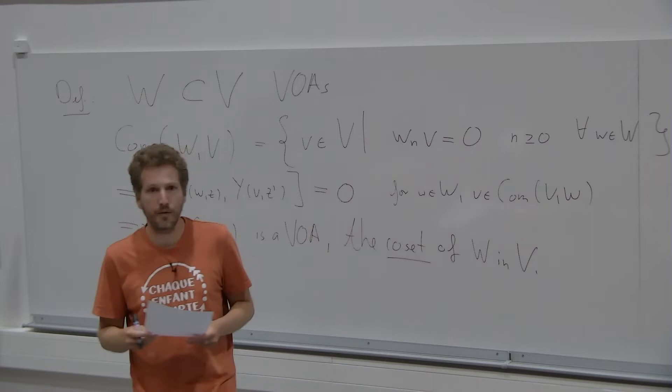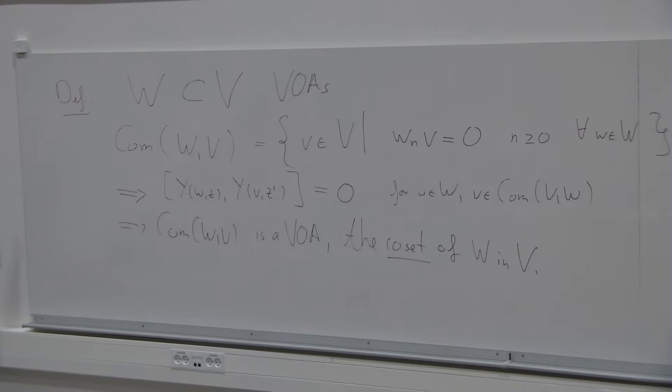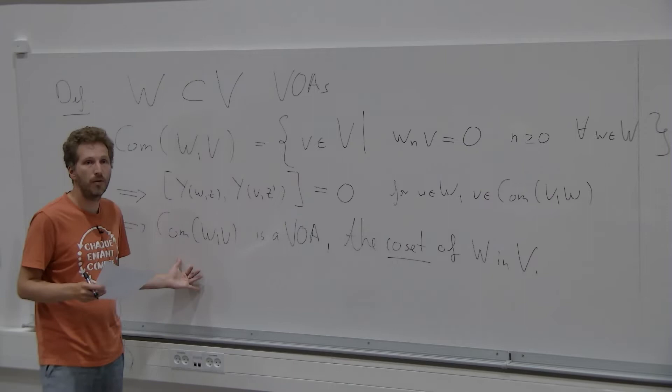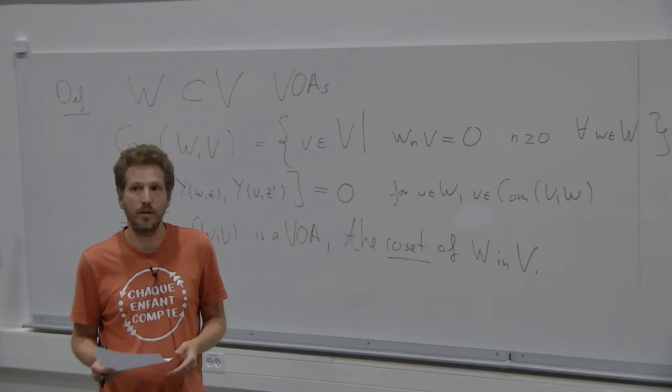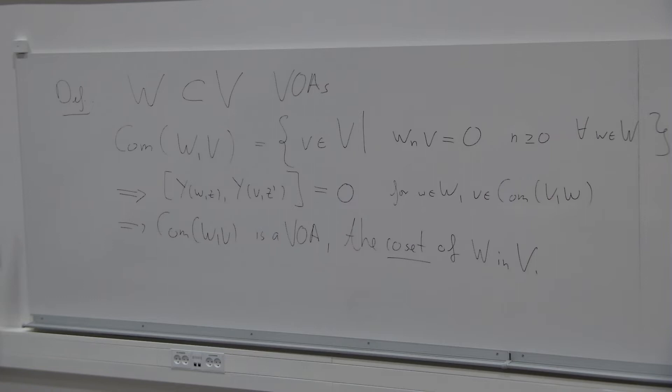So, this name coset comes from physics. Everything comes from physics. And it is what they were looking, physicists were looking at something called gauged Wess-Zumino-Witten models, and whose symmetry algebra is described by such commutants. And geometrically, they think about this as conformal field theories, whose target space is not the compact Lie group. That would be the case in the Wess-Zumino-Witten case, but a corresponding homogeneous space, a corresponding coset. So, that's where it's coming from.